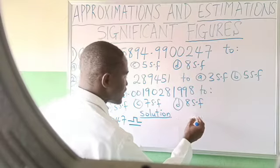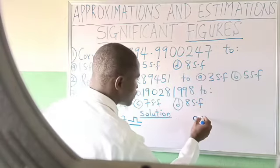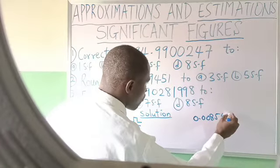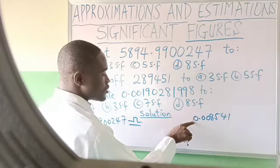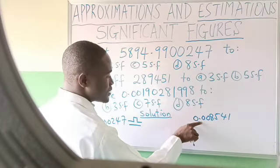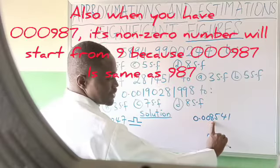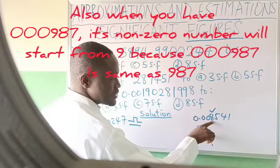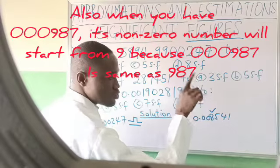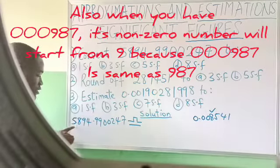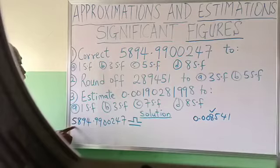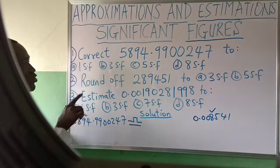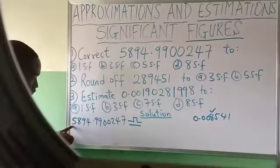When you have something like 0.008541, the first non-zero number — where does it start? It starts at 8. That means you start at 8 to do your counting. But for 15894.9900247, the non-zero counting starts at 5.